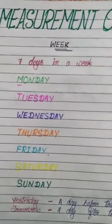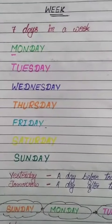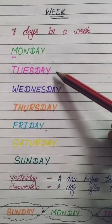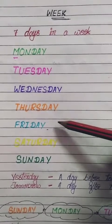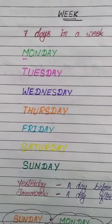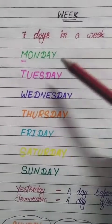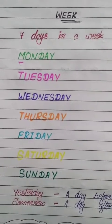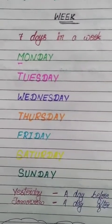There are 7 days in a week. They are Monday, Tuesday, Wednesday, Thursday, Friday, Saturday and Sunday. Children, always remember Monday is the first day of the week and Sunday is the last day of the week.